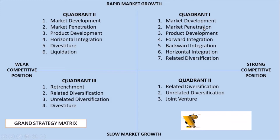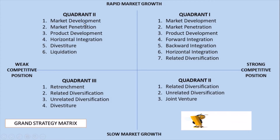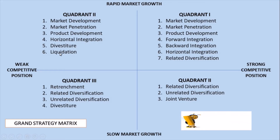Quadrant one is under rapid market growth and strong competitive position, and includes market development, market penetration, product development, forward integration, backward integration, horizontal integration, and related diversification. Quadrant two has rapid market growth but a weak competitive position, and includes market development, market penetration, product development, horizontal integration, divestiture, and liquidation.